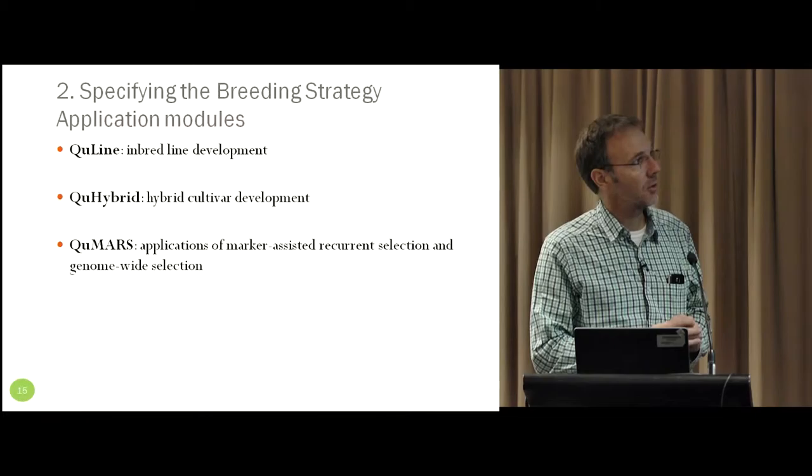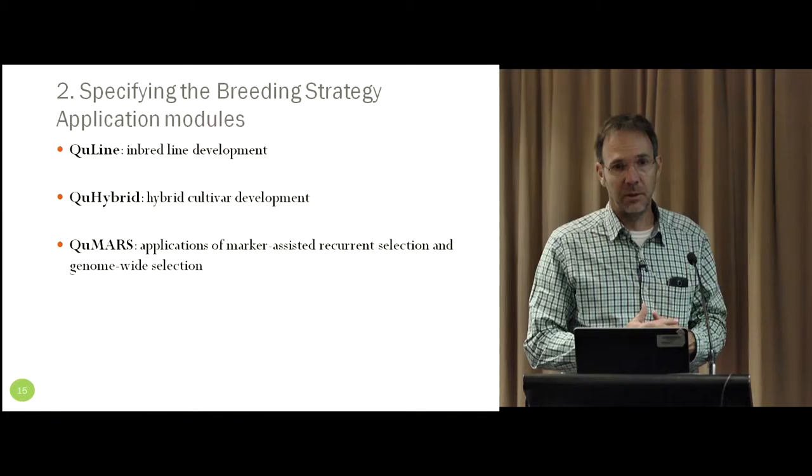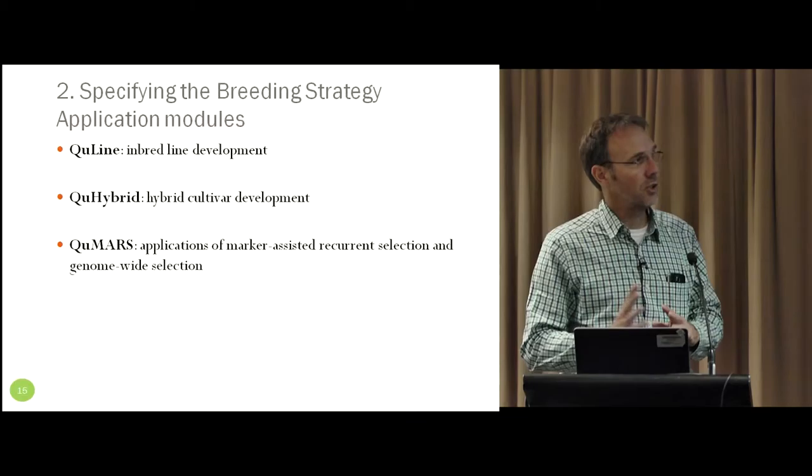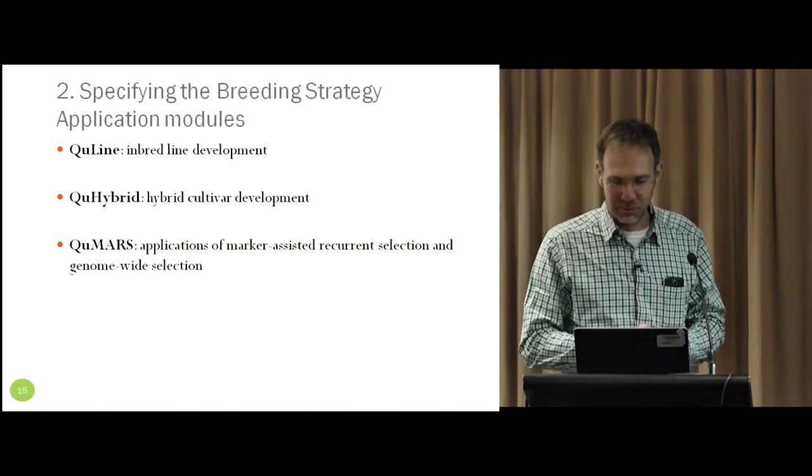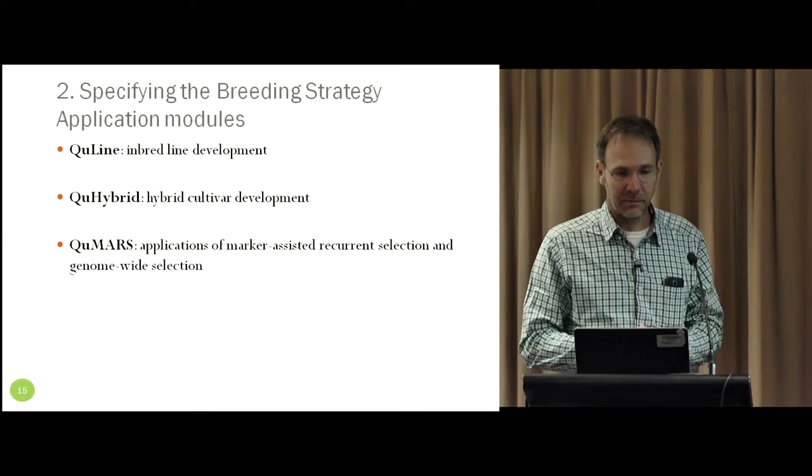And these are the main application modules. There's one that's on inbred line development, one that's on hybrid, and one that's on marker-assisted recurrent selection. And I think Zhang Kang's also got a version on genomic selection, which is really just a modification of this last one. But he and I haven't been working together much in the last couple of years. We haven't been in a project together, but I've been trying to find an excuse to catch up with him and see where it's up to.